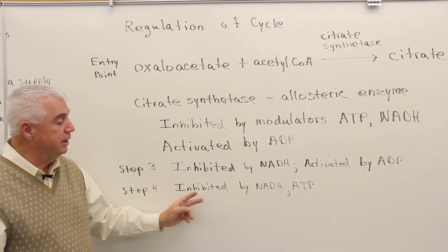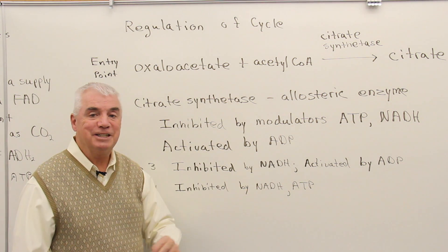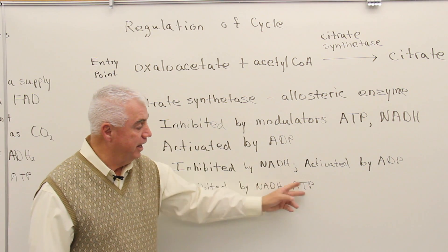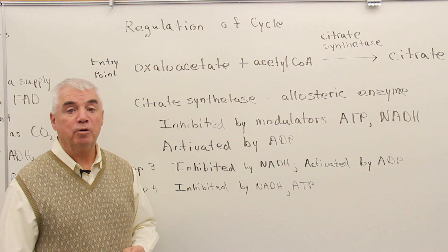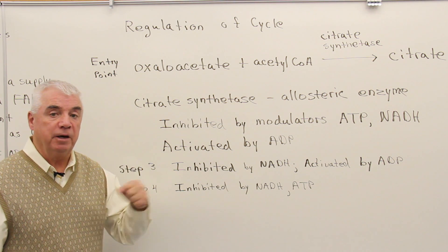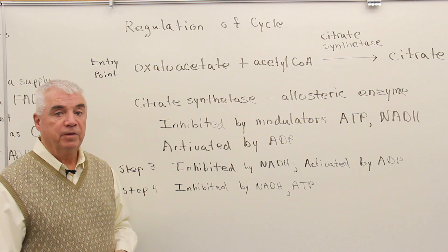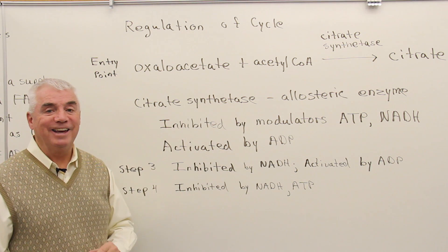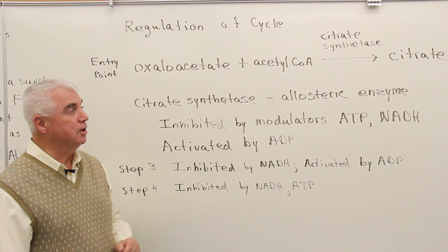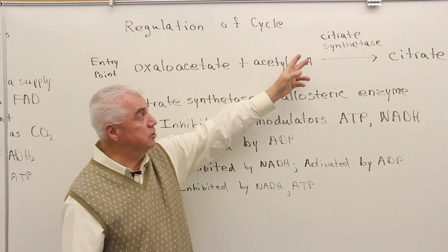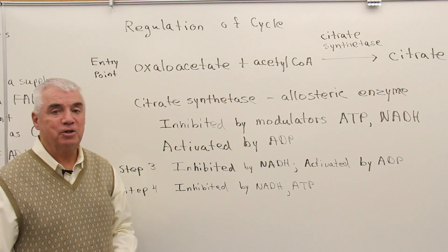Step four is inhibited by NADH and ATP. Again, if energy levels are high, we don't need the citric acid cycle working at maximum, so it slows down. Very interesting how the body controls these processes through allosteric enzymes.